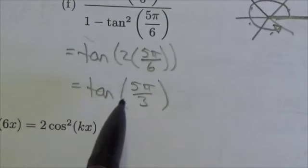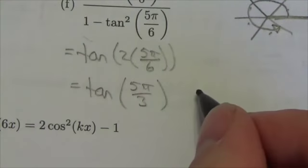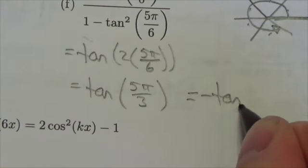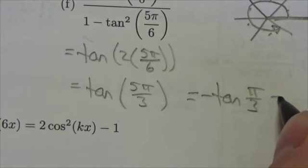So, tangent is going to be negative in the 4th quadrant. So, this is going to be equivalent to the negative tangent of π over 3, my reference angle.